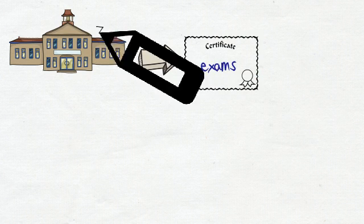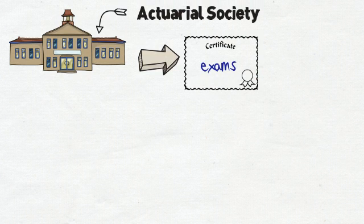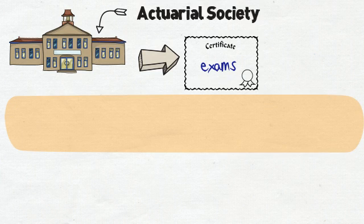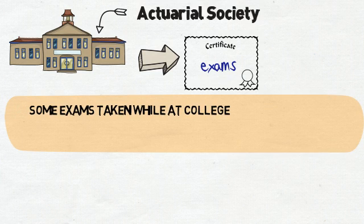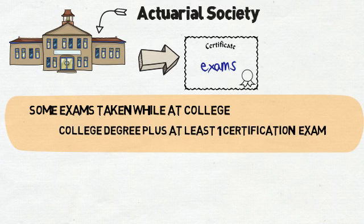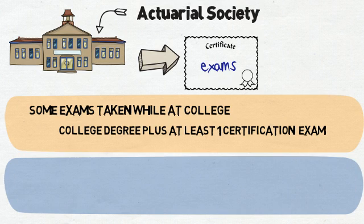Before becoming a fully qualified actuary, individuals must pass certification exams given by actuarial societies. Some of these exams can be taken while you are still in college. In fact, some companies expect students to have passed at least one actuarial exam in addition to getting a degree.